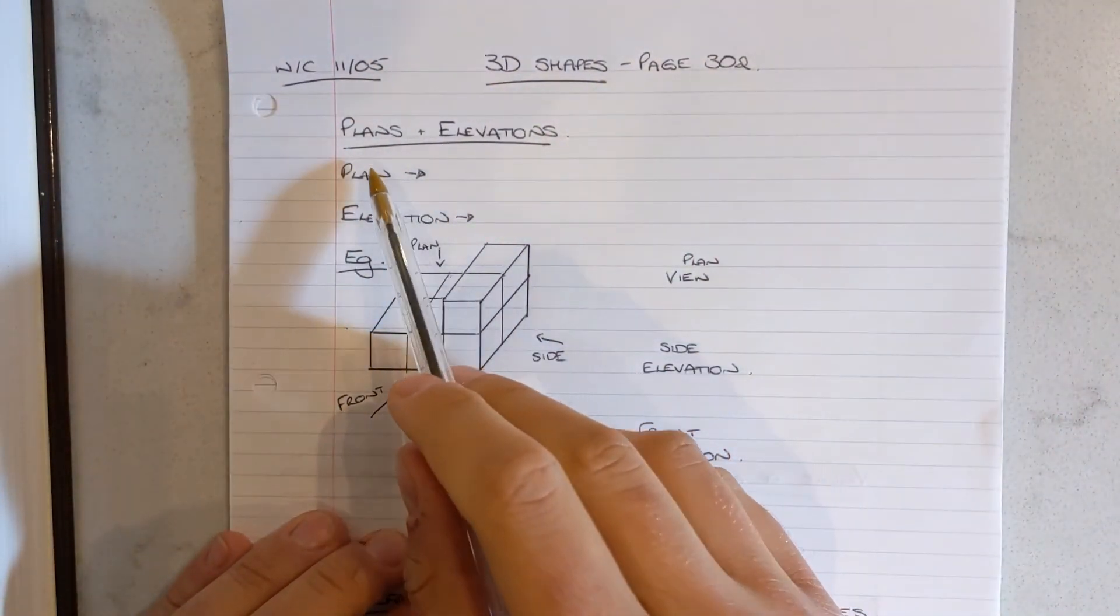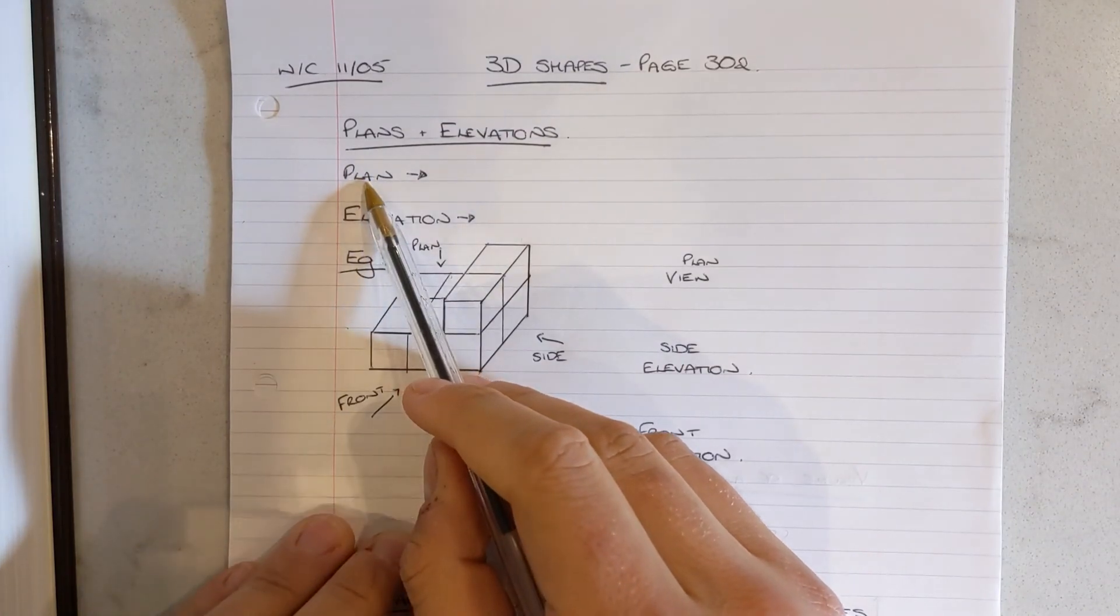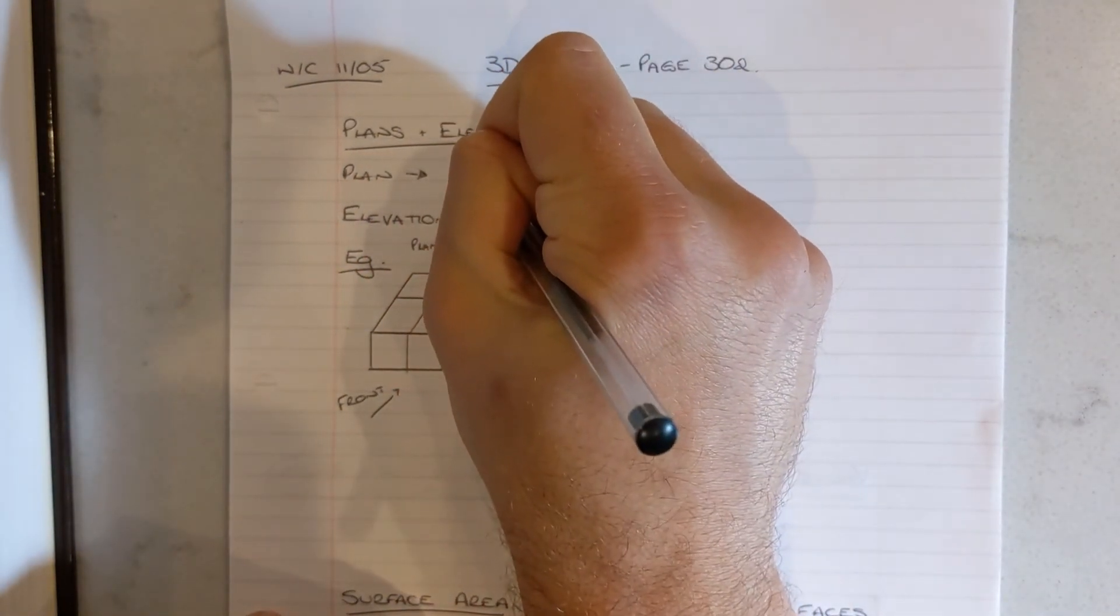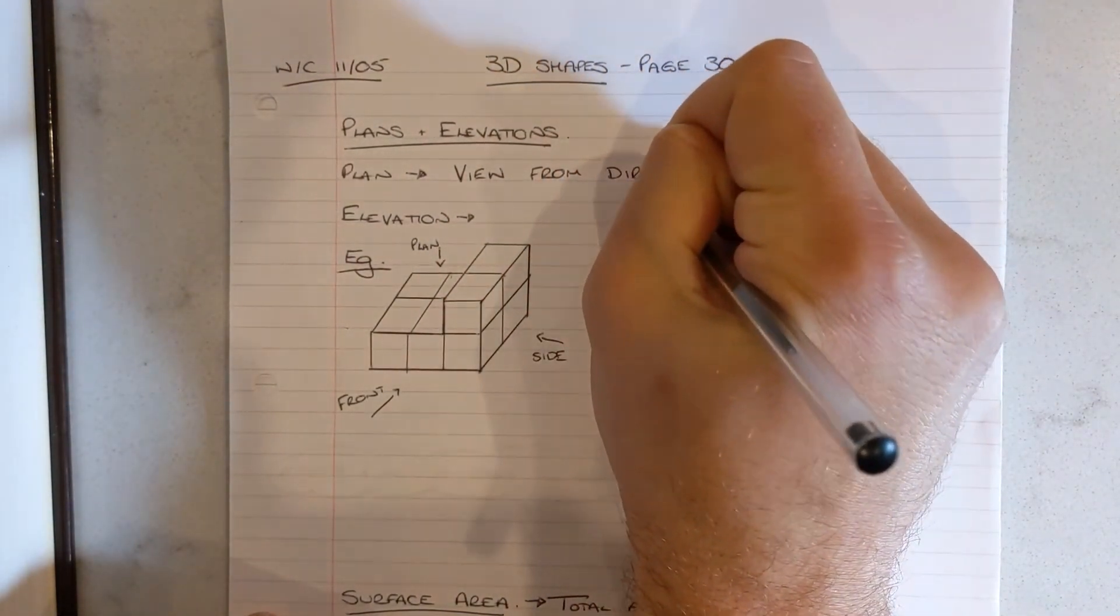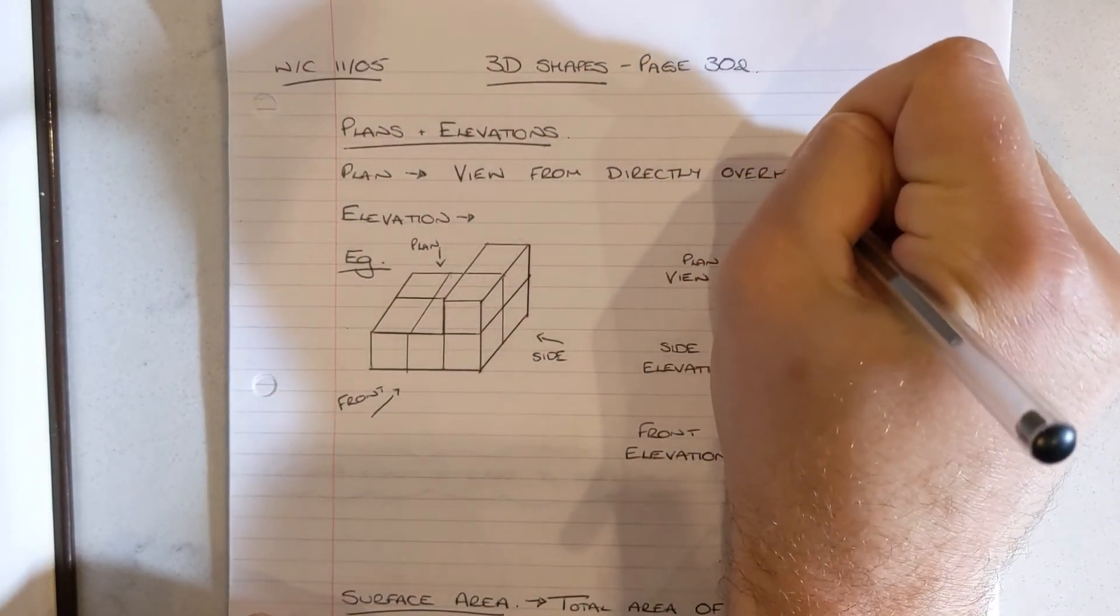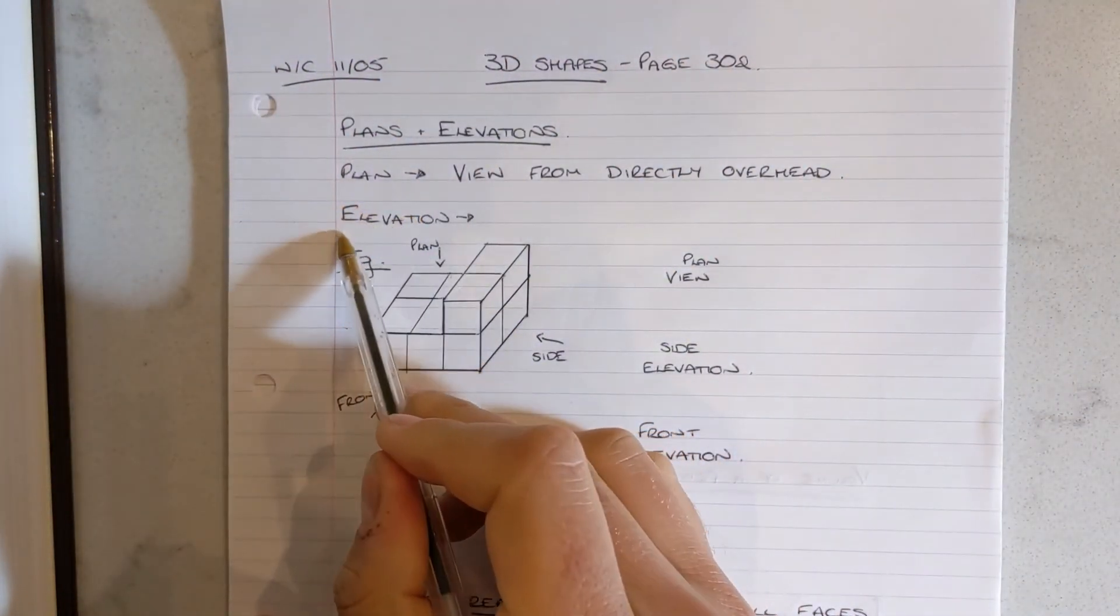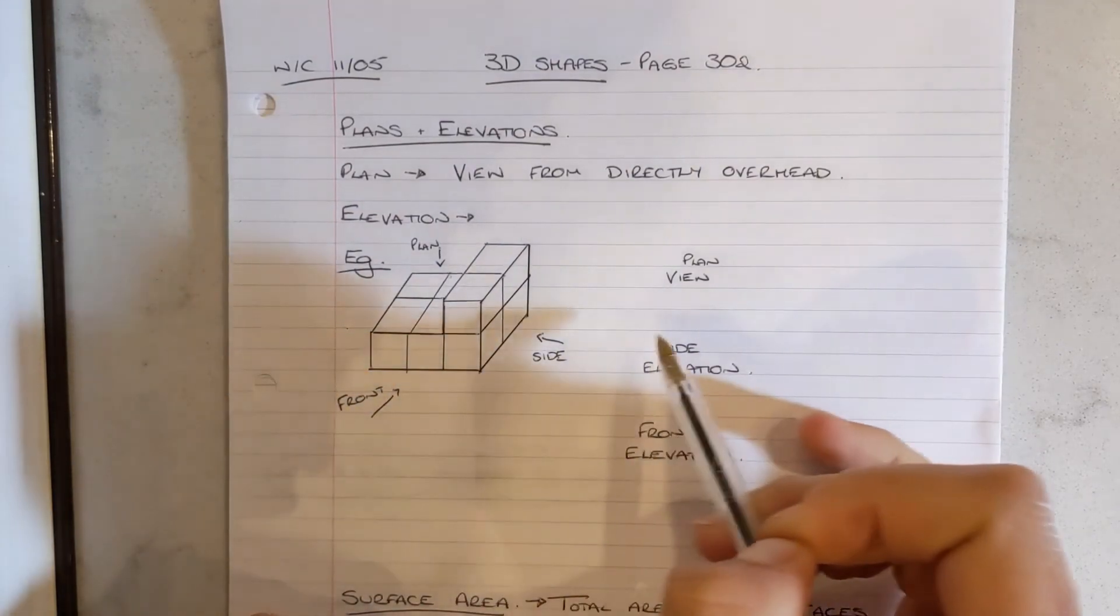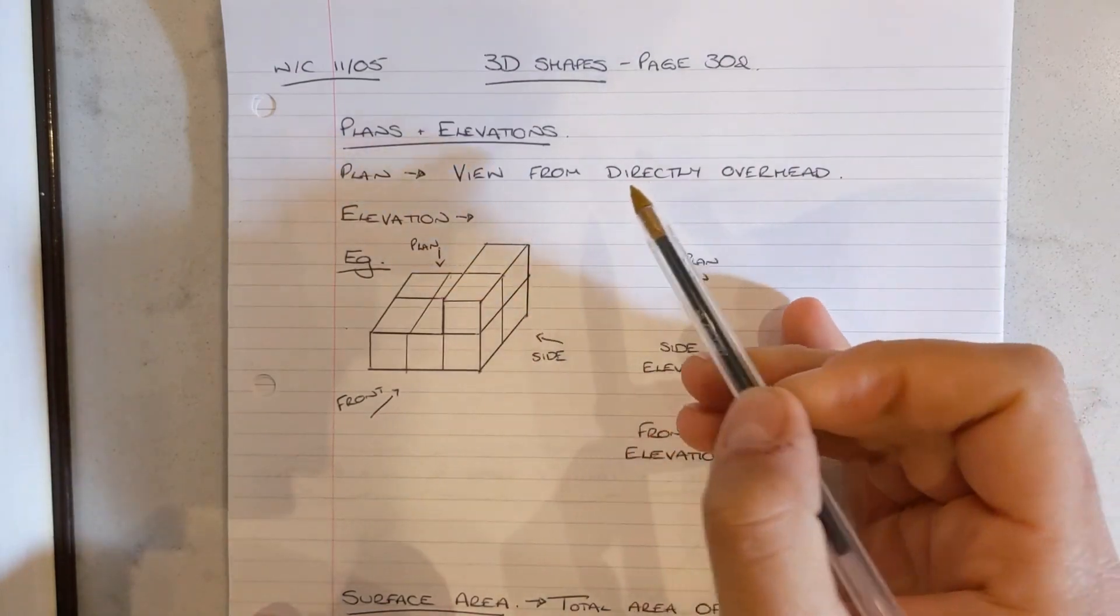To begin with, we're going to look at plans and elevations. A plan view of any 3D shape or solid is a view from directly overhead, kind of like a bird's eye view. An elevation is a view from either the front of a shape or the side of the shape. So you can have a front elevation or a side elevation.